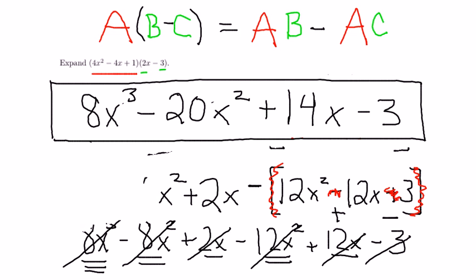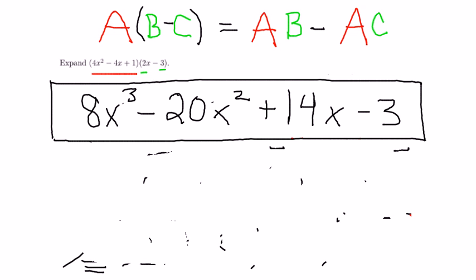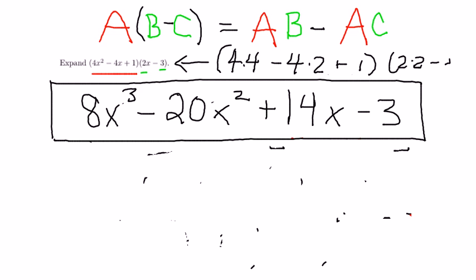Now, how might you check your work? Let's just try x equals 2 and see what happens. So, if x equals 2 in our original setup, we're going to get 4 times 4 minus 4 times 2 plus 1, all of that times 2 times 2 minus 3.